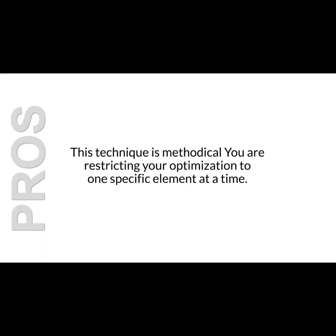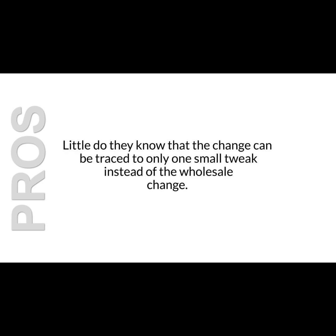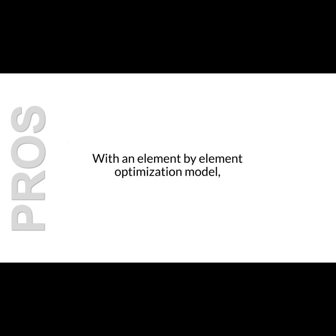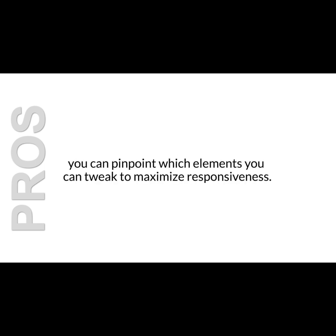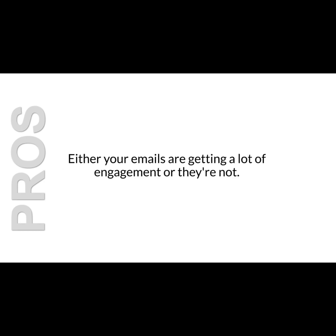Keep optimizing on an element-by-element basis until you maximize the overall responsiveness of your emails. Advantages. This technique is methodical because you're not making wholesale changes across the board — you restrict optimization to one specific element at a time, removing all guesswork. A lot of list marketers fail because they make wholesale changes, get results, but never know which single tweak actually caused the improvement. With an element-by-element optimization model, you can pinpoint exactly which elements to tweak. You're not relying on intuition or gut feelings — the process is predictable and statistics-based.